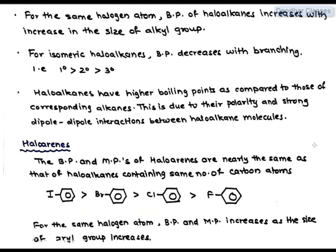In case of haloarenes, the boiling points and melting points are nearly the same as that of haloalkanes containing the same number of carbon atoms. For the same halogen atom, boiling point and melting point increases as the size of aryl group increases.